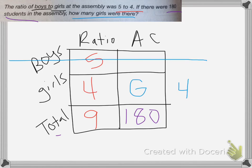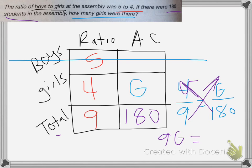It's going to be 4 over 9 equals the girls over 180. We do cross products and I end up with 9 girls equals 720. Divide both sides by 9 and I end up with 80 girls at the assembly.